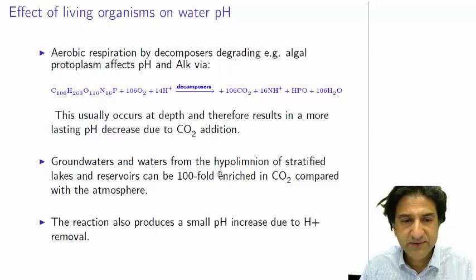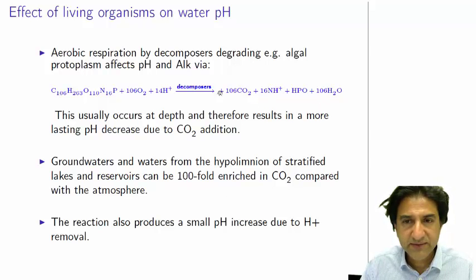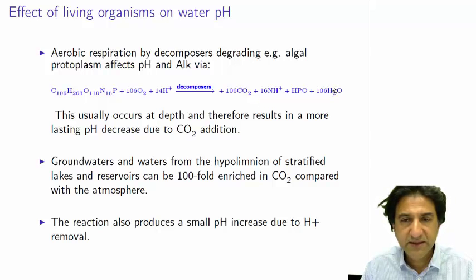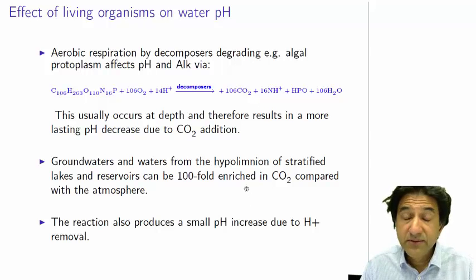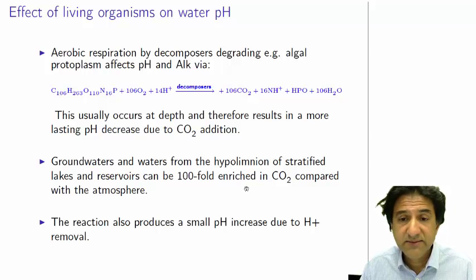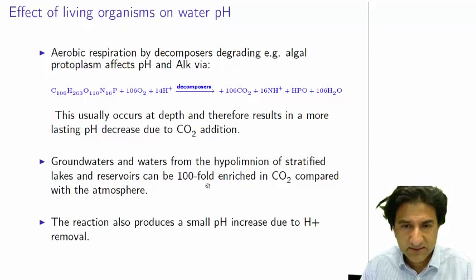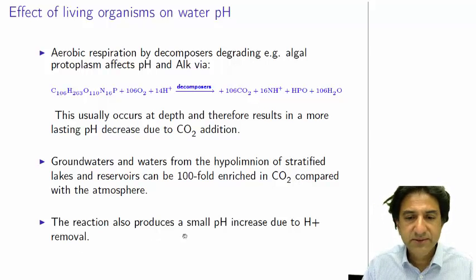Groundwaters and waters from the hypolimnion of stratified lakes and reservoirs can be hundredfold enriched in CO2 compared with the atmosphere. That means there's a lot of CO2 coming from the muck decomposing down there. Because of lack of equilibrium and exchange, it's hundredfold enriched in CO2. You may actually see this in swamps — when the temperature warms up, you can see the swamps bubbling away. It could be CO2 or other gases coming up from the hypolimnion. The reaction also produces a small pH increase due to H-plus removal.